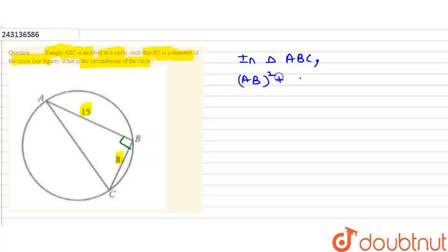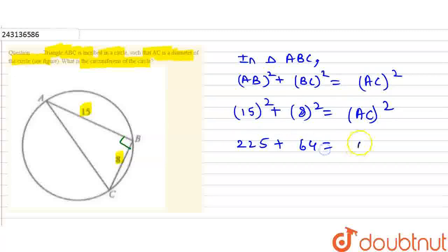AB² + BC² = AC². So (15)² + (8)² = AC². 15 squared is 225, 8 squared is 64. We get 225 + 64 = 289 = AC².